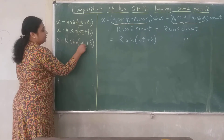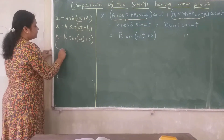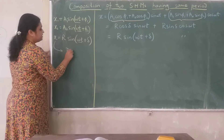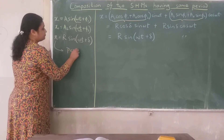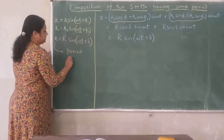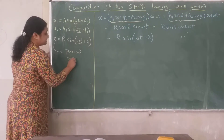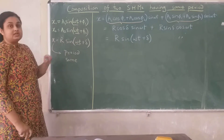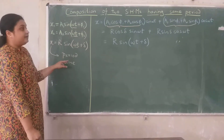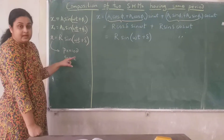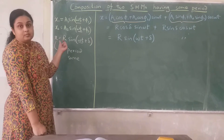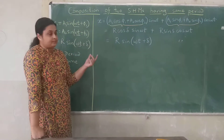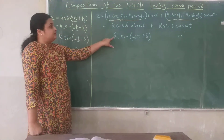Notice that ωt appears with the same ω in the resultant, which means the period of the new waveform is the same. The amplitude and initial phase are changing, but the period remains the same. And the resultant is a simple harmonic motion — that is what we have proved. Now we will see how to find R and δ.